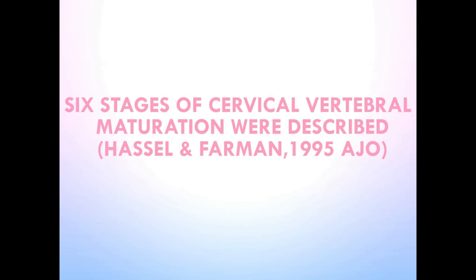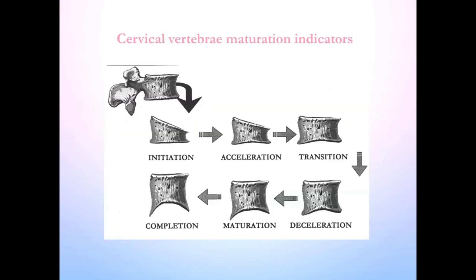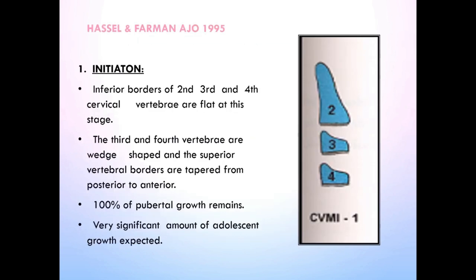Coming to the six stages of cervical vertebral maturation. These were described by Hassel and Farman in 1995. These stages are: Initiation, Acceleration, Transition, Deceleration, Maturation, and Completion. And now we will discuss them one by one.